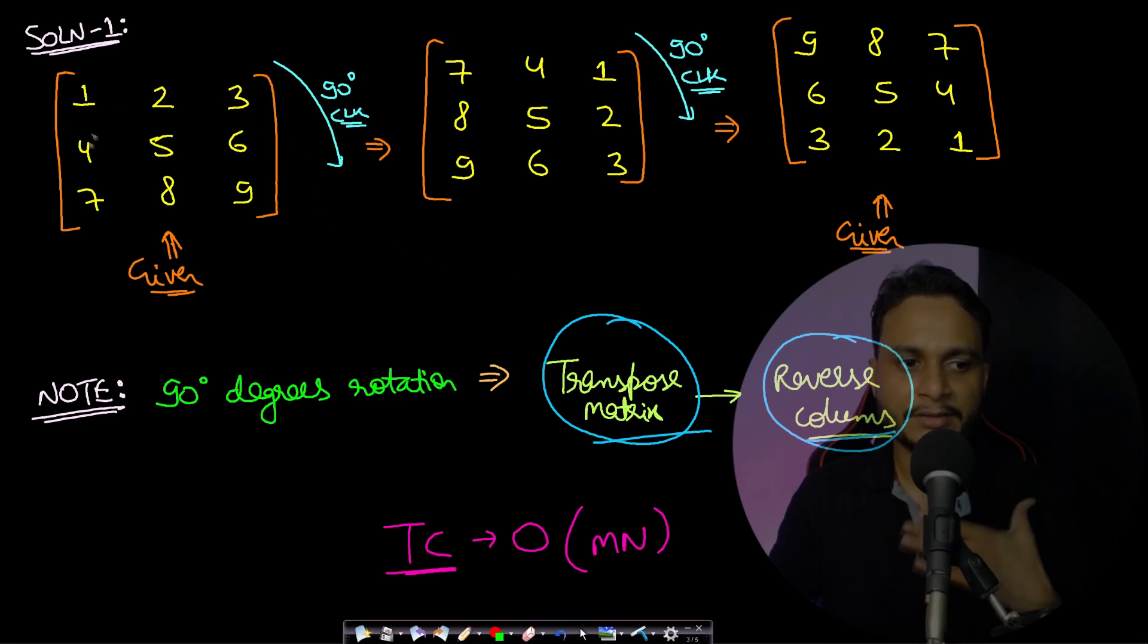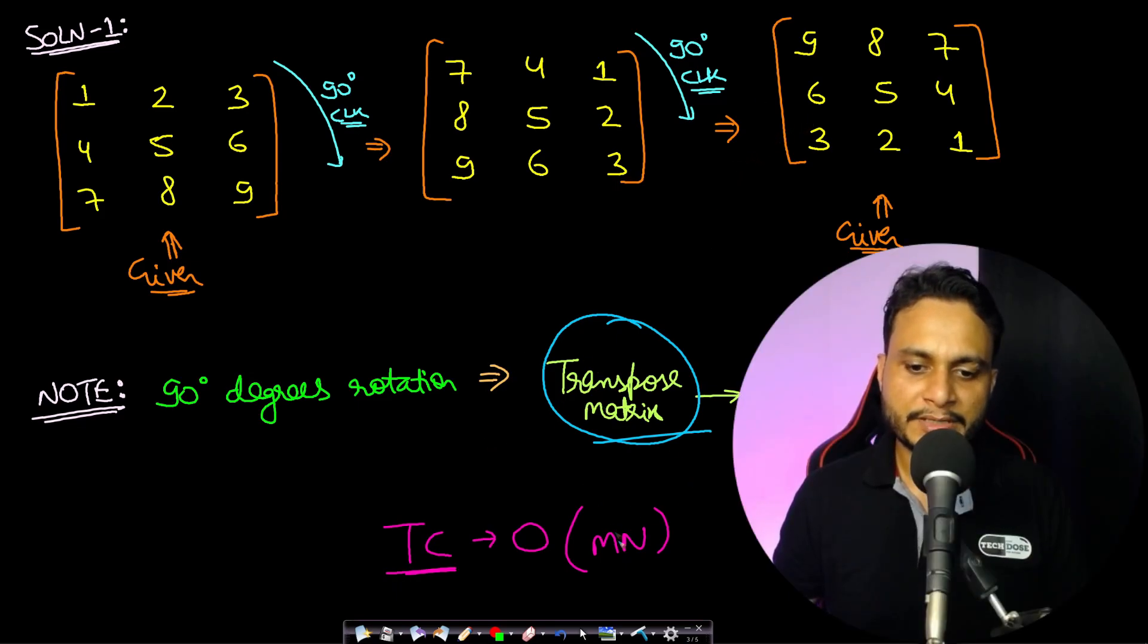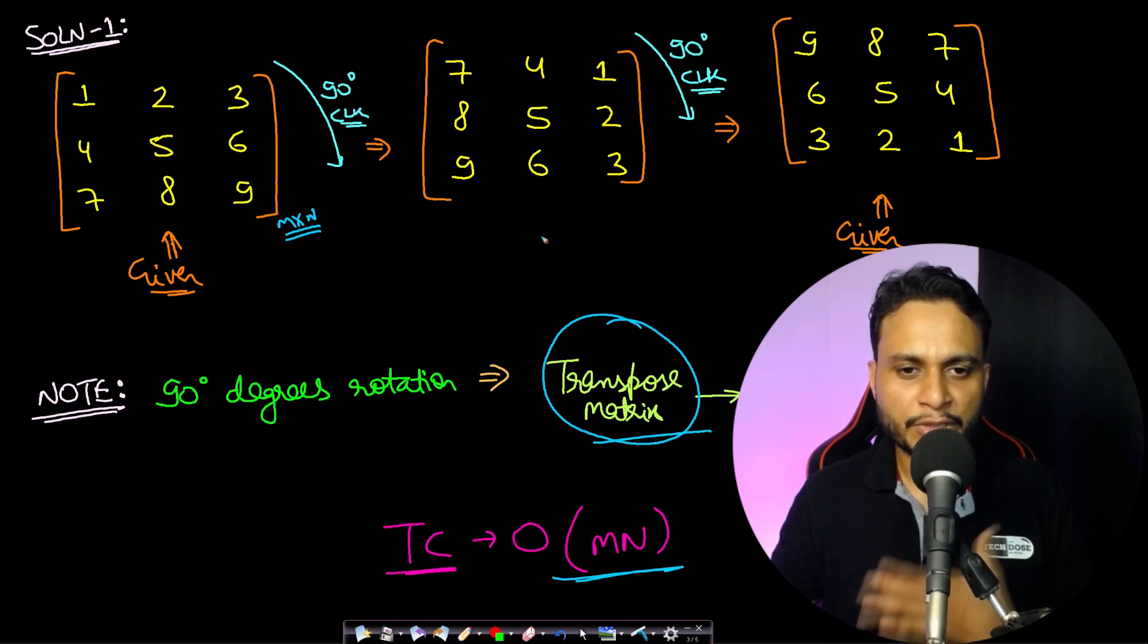So if these two steps are repeated two times, then you will be rotating the entire given matrix by 180 degrees. So the time complexity here will be order of m*n where m is the number of rows and n is the number of columns, and we are just repeating it two times. And this is an in-place algorithm, we are not taking up any extra space.